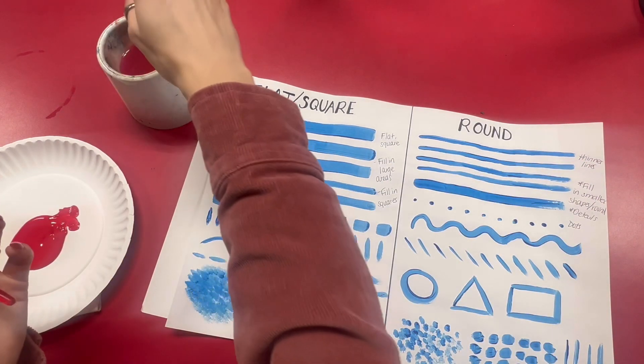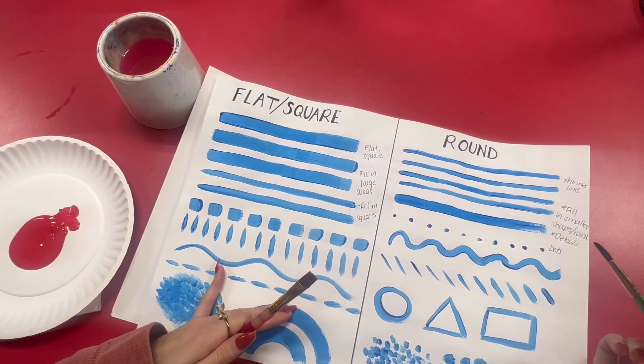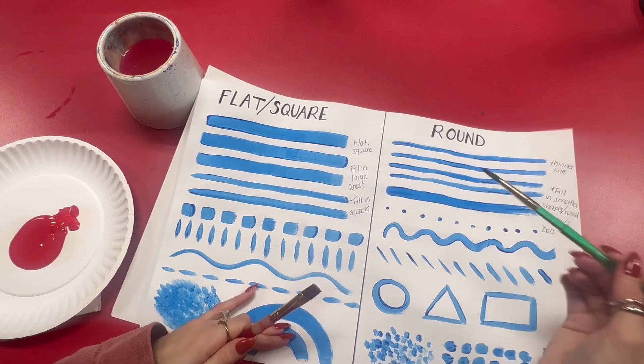A round brush is used for filling in smaller shapes, rounder shapes, and doing details. It creates thinner lines.